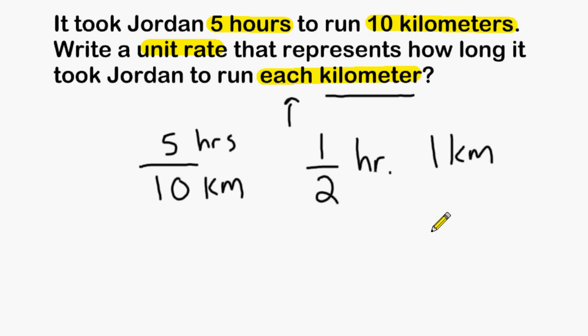Another way to find the unit rate is to take the number 5 and divide it by the number 10. Because we are trying to figure out how long it took him to run each kilometer, we must divide by the number of kilometers.